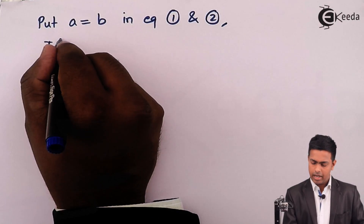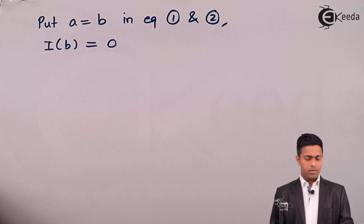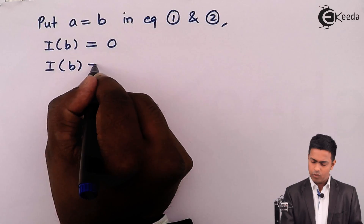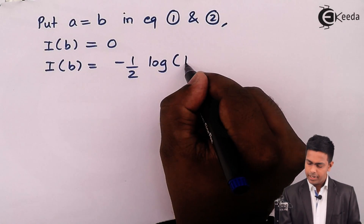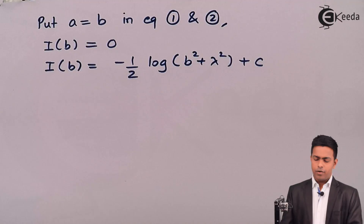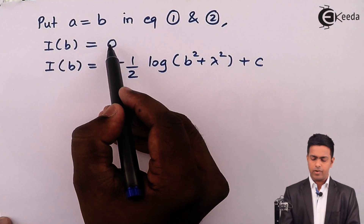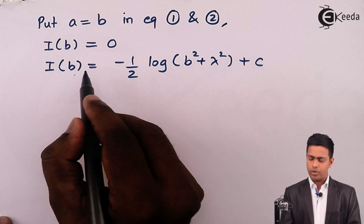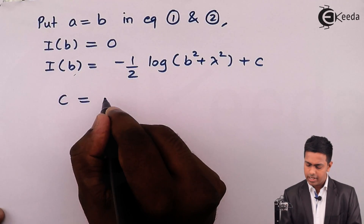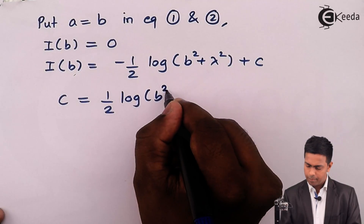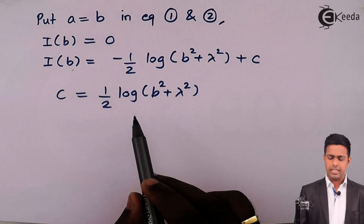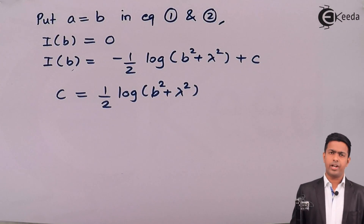Putting a = b in equation 1: I(b) = 0. Putting a = b in equation 2: I(b) = −(1/2)·log(b² + λ²) + C. Since I(b) = 0 from equation 1, we get 0 = −(1/2)·log(b² + λ²) + C, so C = (1/2)·log(b² + λ²).